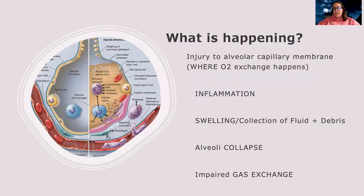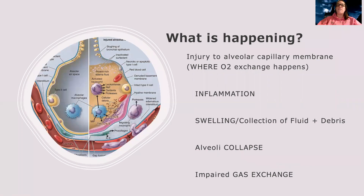So what's going on inside? Why can this patient not get the oxygen they need? There's injury in the alveoli at the capillary membrane — that's where oxygen exchange happens. Some sort of injury leads to inflammation. Think of sepsis: when there's inflammation, your capillaries and blood vessels open up to create a pathway for infection-fighting and inflammation-fighting particles to come help.